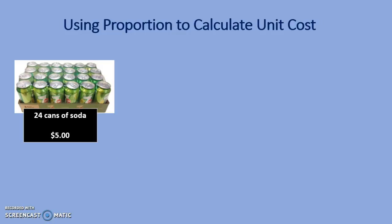The units in this proportion are cans and dollars. Carefully match the correct number with the correct unit. 24 cans cost $5. How much is one can? So X goes with the dollars, and one goes with the cans.